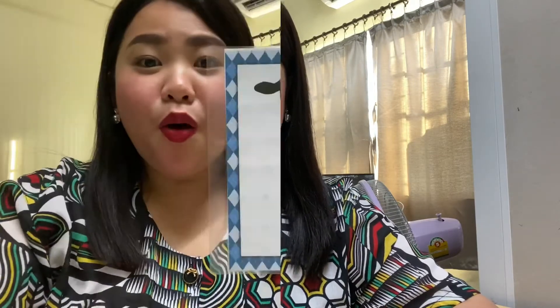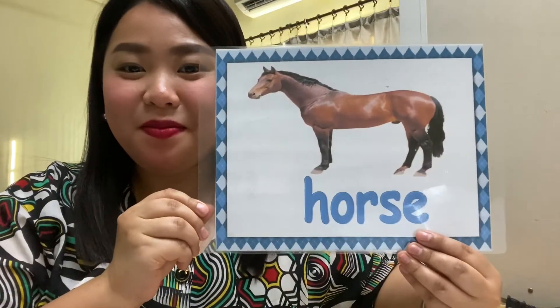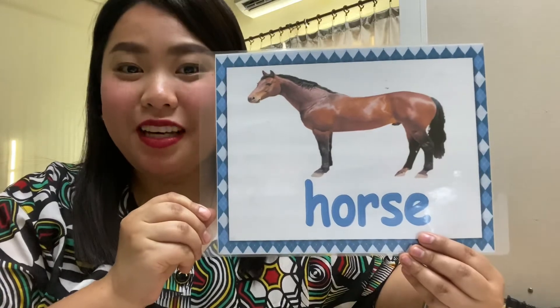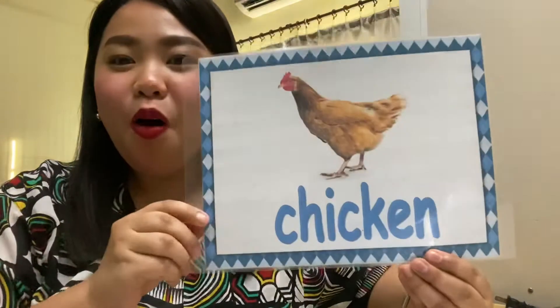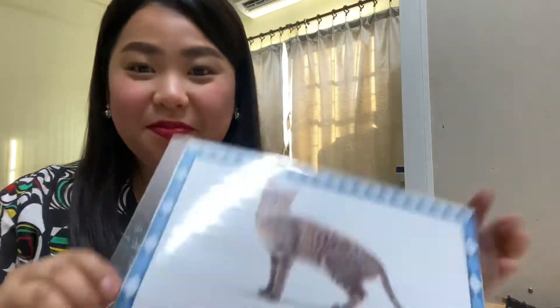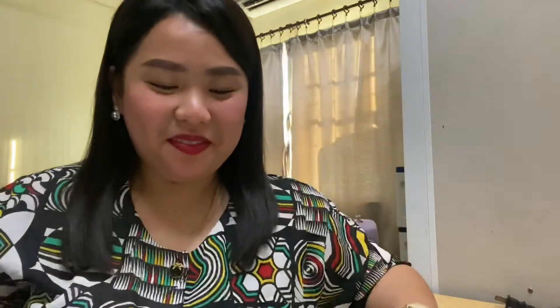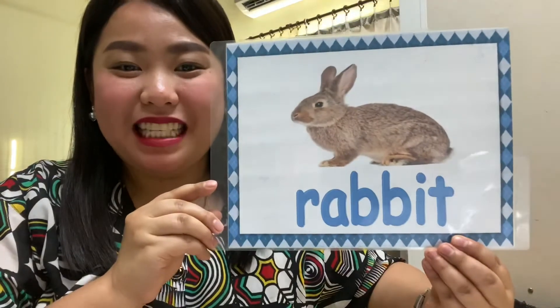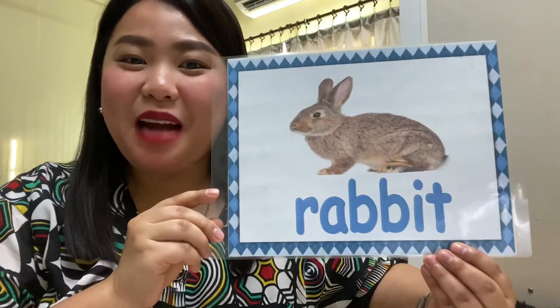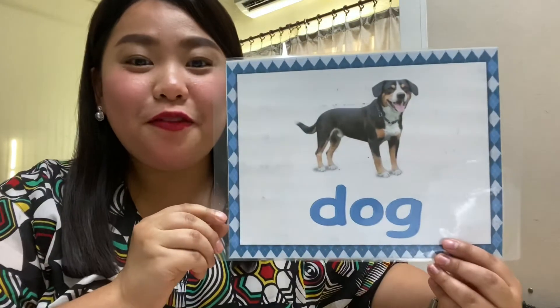Now let's take a review about the different land animals that we learned. What land animal is it? Very good — it's a cow. What land animal is it? Very good — it's a horse. What land animal is it? Very good — it's a chicken. What land animal is it? Very good — it's a cat. What land animal is it? Very good — it's a rabbit. What land animal is it? Very good — it's a dog.